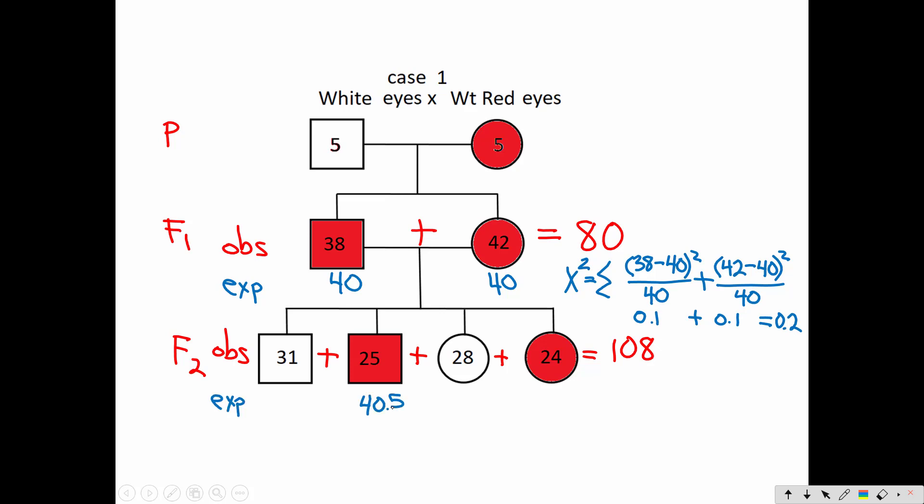And of course, the rest of the males, the rest of the 54, I would expect to be white-eyed. Or I can take 54 and times it by .25, 13.5. And I'm expecting the same numbers for the females. Now I'll calculate my chi-square value with these numbers of observed and expected.